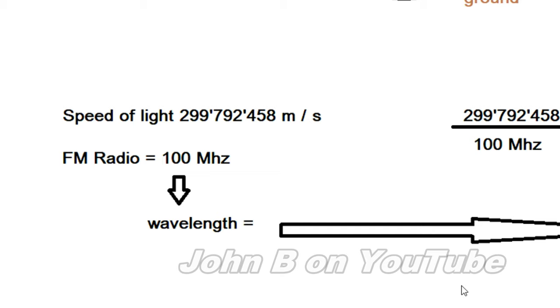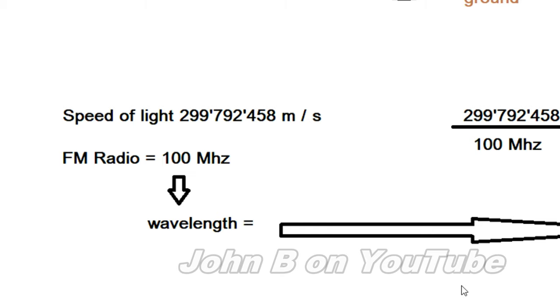So before I forget, here's how you work out your aerial length. To find the wavelength of the frequency we're listening to, it's the speed of light nearly 300 million meters a second divided by 100 megahertz. That gives you the wavelength.